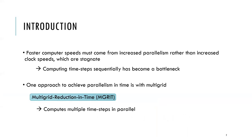Based on current trends in computer architectures, faster computer speeds must come from increased parallelism rather than increased clock speeds. One approach to achieve parallelism in time is with MGrit. We consider the scheme known as multi-grade reduction in time.